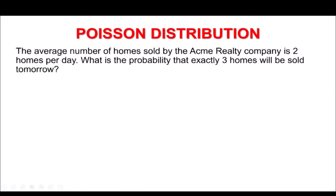The average number of homes sold by the Acmariel Tea Company is 2 homes per day. What is the probability that exactly 3 homes will be sold tomorrow? This is a Poisson distribution — we have a count specified per day, so 2 homes per day will be the value of our lambda. The number of homes we want, 3, will be our x.